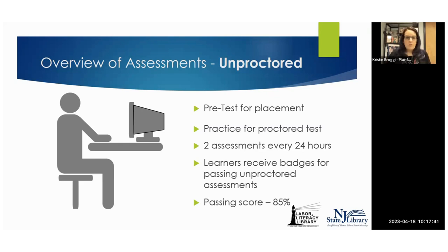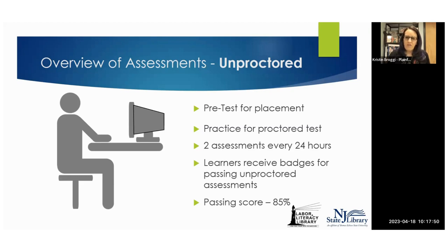A passing score, both for proctored and unproctored assessments, is 85%. If a learner passes an unproctored assessment — gets 85% — they're going to receive a badge for their passing score. But if they are unproctored, they will not be receiving a certificate.